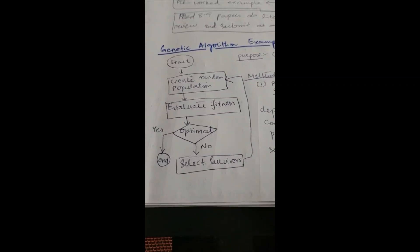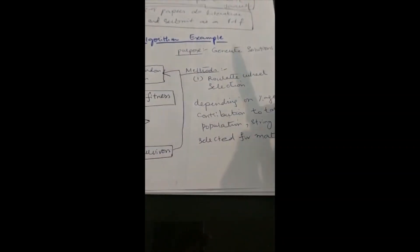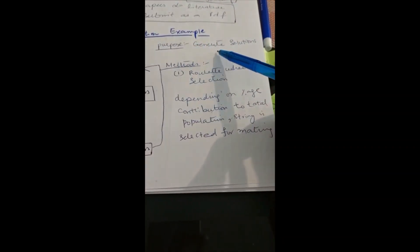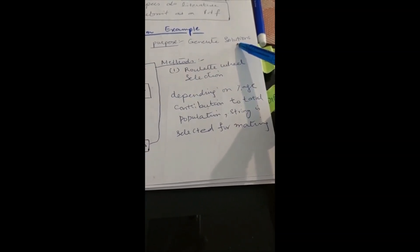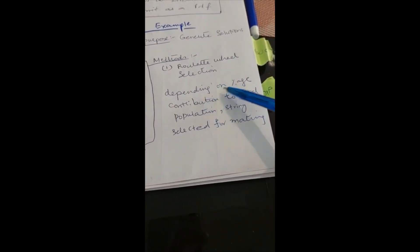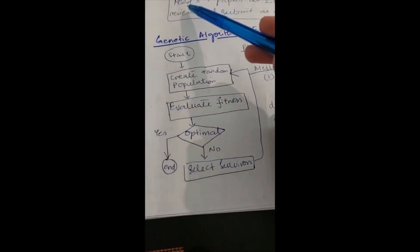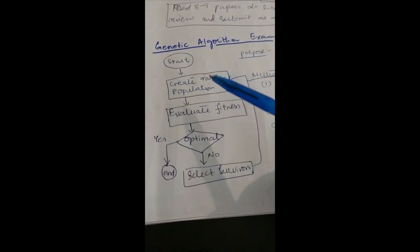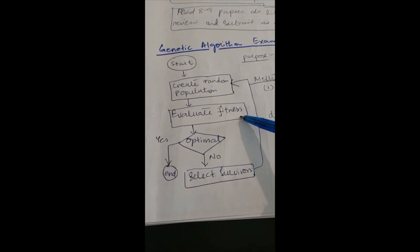Assalamualaikum. Today I am going to teach you about Genetic algorithm with an example. Genetic algorithm is used to generate solutions in biology and many engineering problems. We have different methods to solve this. The first important method is Roulette-Wheel Selection. The algorithm is like a flowchart. First we start the algorithm, create random population, and evaluate the fitness of each parent.